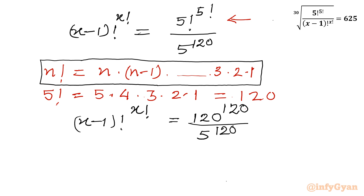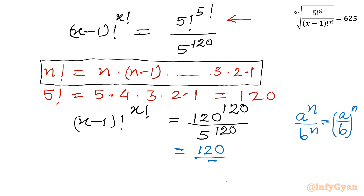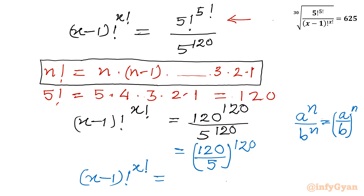We know a property of exponents: a power n over b power n equals a over b, raised to the power n. So x minus 1 factorial raised to the power x factorial equals 120 divided by 5, raised to the power 120, which is 24 raised to the power 120.